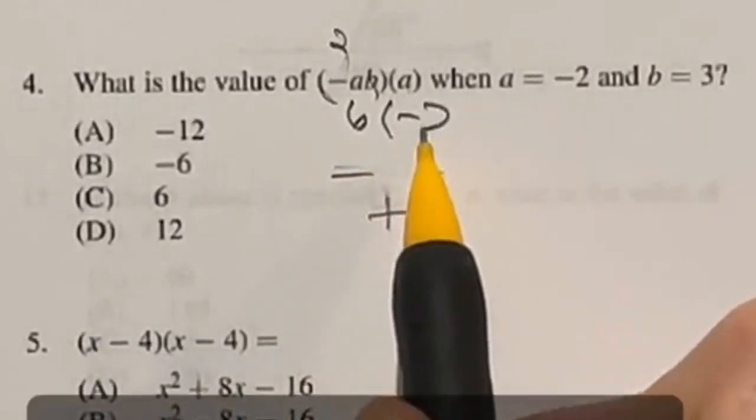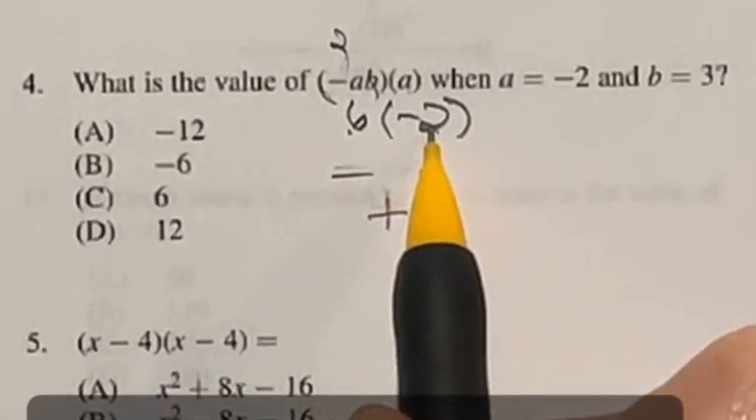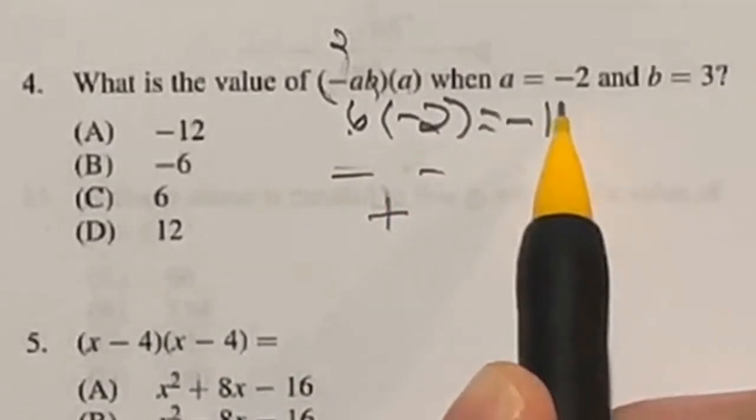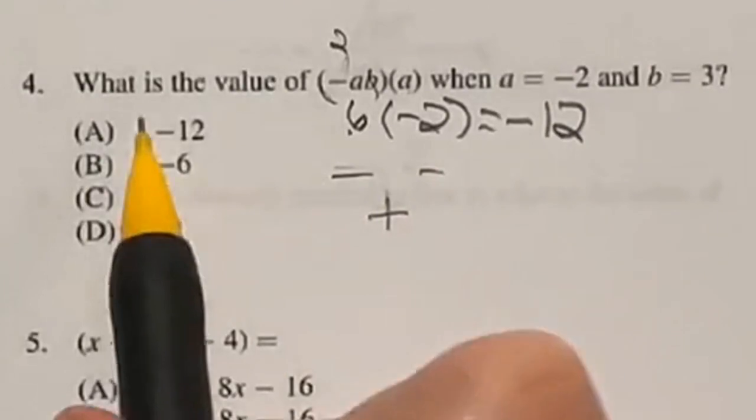We're going to multiply that by another negative 2. And now we have a positive and a negative. So that answer should be negative. So this answer is going to be negative 12, 6 times 2, which is answer A.